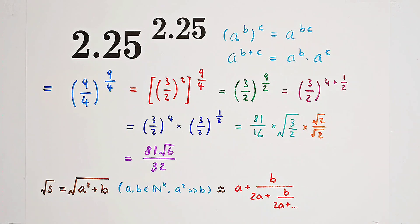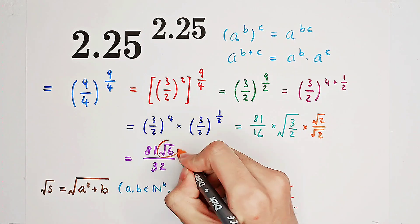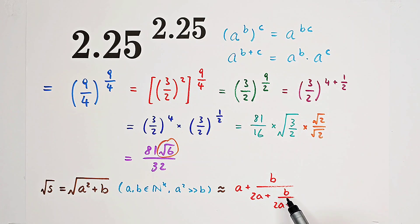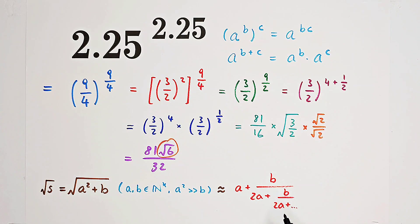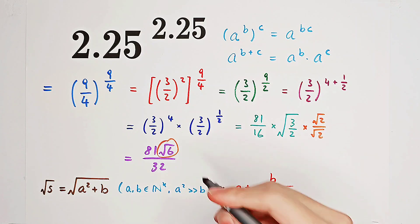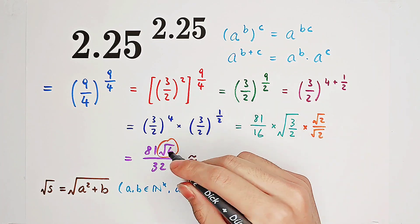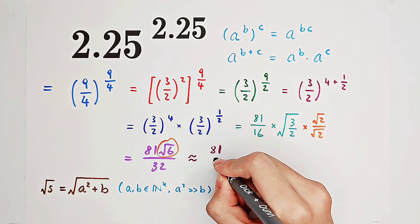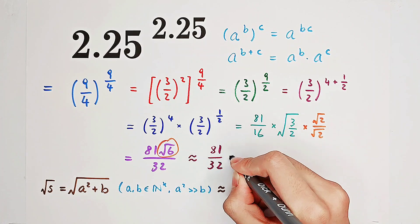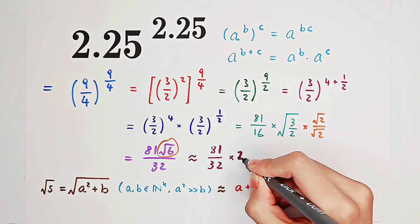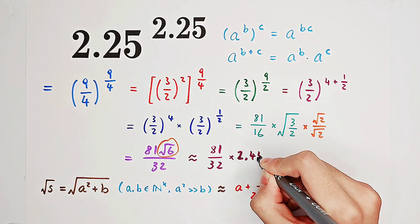And yes, we can use this method to approximate square root of 6. Because it's the only number with a square root. Just use this method and just take 4 or 5 fractional lines. It's not difficult. And you can get that square root of 6 is approximately equal to 2.45.